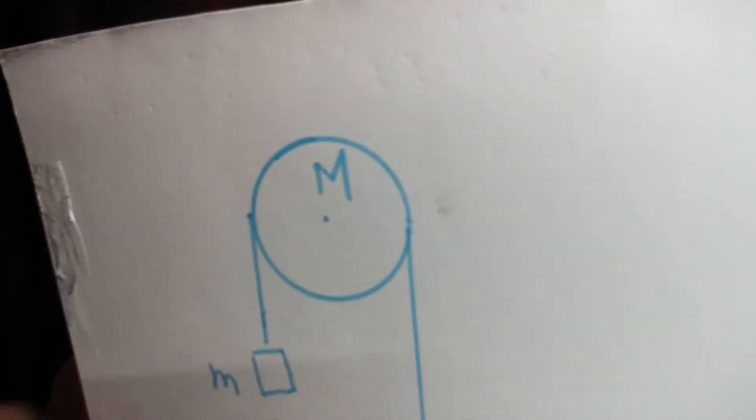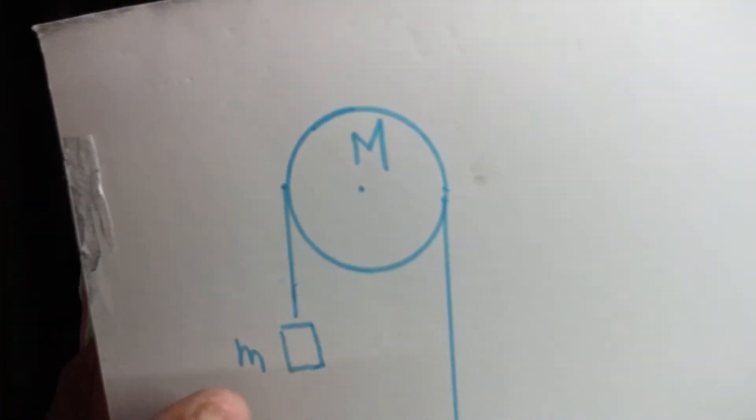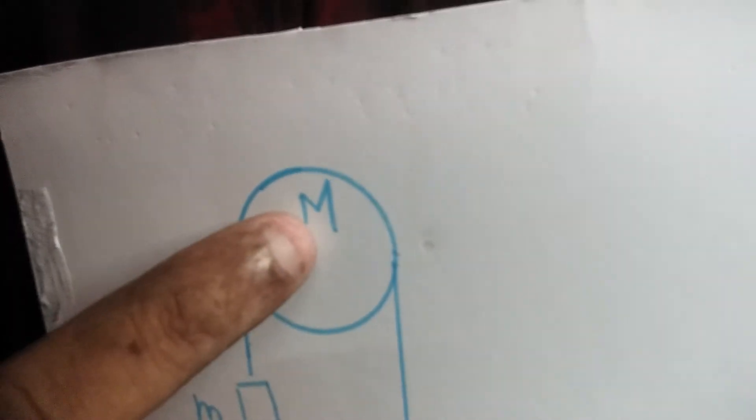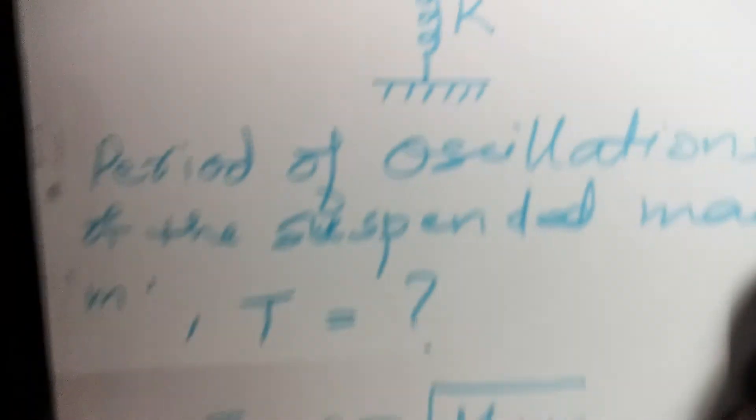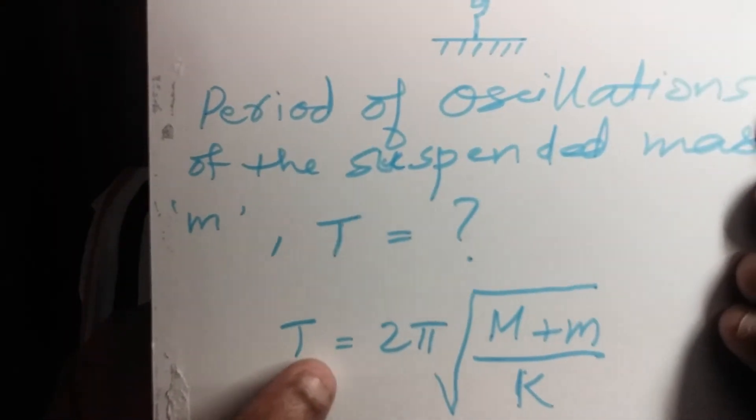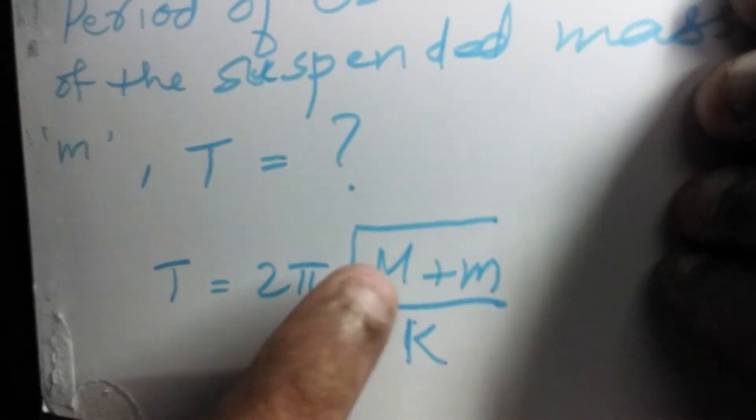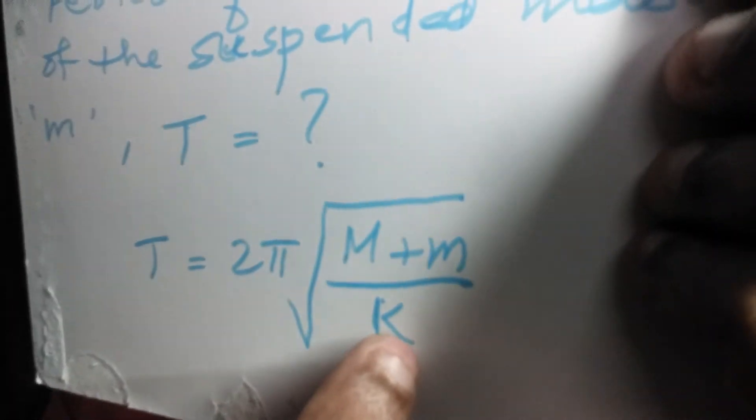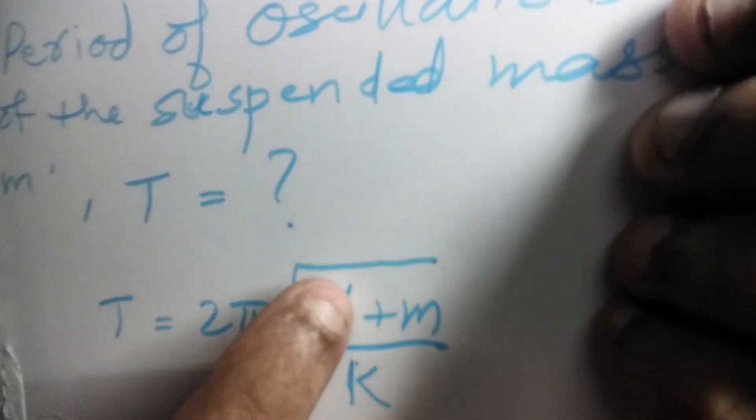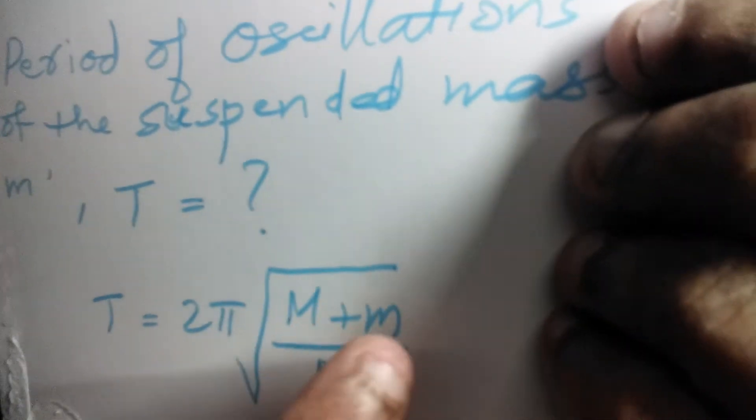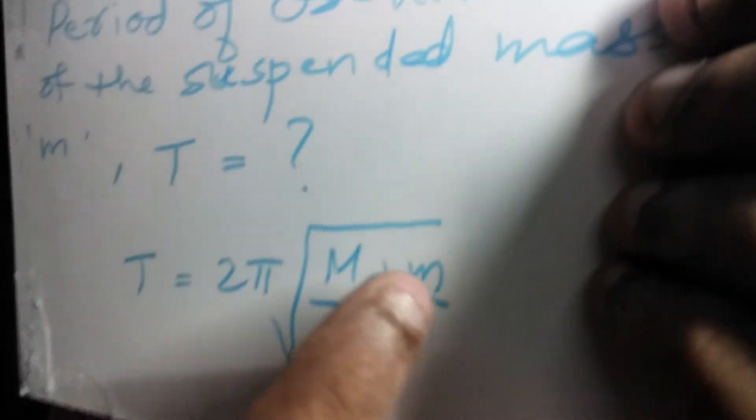And inertia factor of this pulley will also come into action, so that period T equals 2π root of M plus M by K. Mass of the pulley must also be added to the oscillating mass.